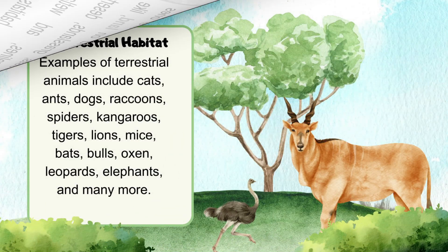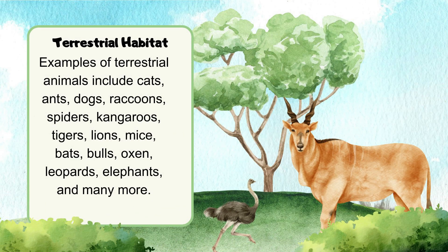Examples of terrestrial animals include cats, ants, dogs, raccoons, spiders, kangaroos, tigers, lions, mice, bats, bulls, oxen, leopards, elephants, and many more.